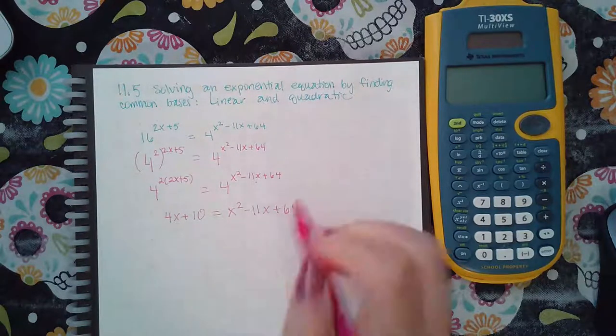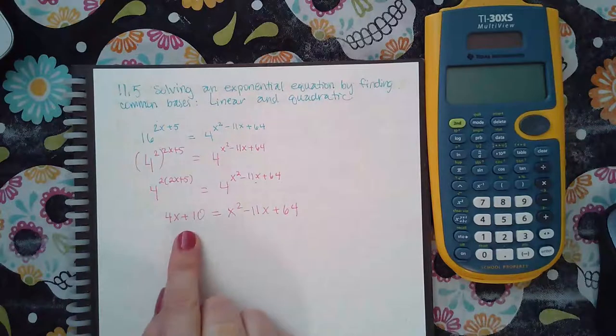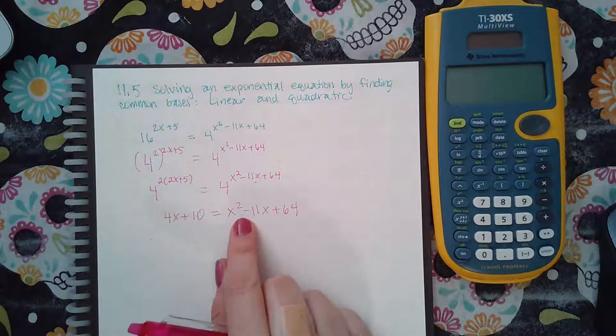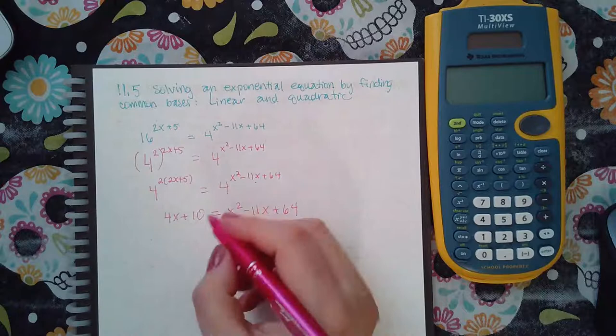Notice that I dropped my bases and I distributed the two at the same time. Now I do have an x squared, so I do have to set it equal to 0.